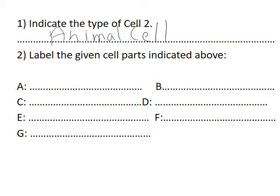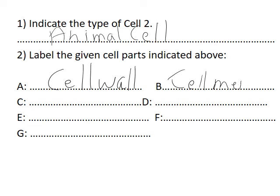Moving to the second part: label the given cell parts. Indicate A — it is the cell wall. Excellent, thank you — cell wall. Moving to B — it's the cell membrane. If I asked you which one, the cell wall or the cell membrane, is present only in plant cells? — Cell wall! Excellent, thank you.